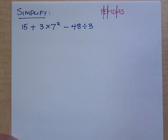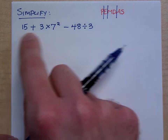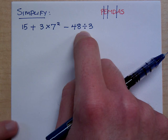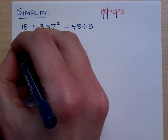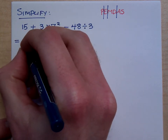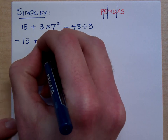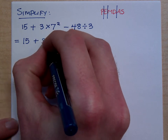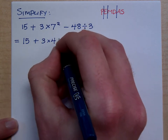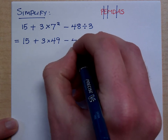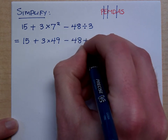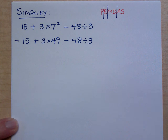So the first thing I see here — I don't see any parentheses, do you? No. I do see exponents, so we need to make sure that we take care of the exponents. So this is still 15 plus 3 times 7 squared, which is 49, and then minus 48 divided by 3.